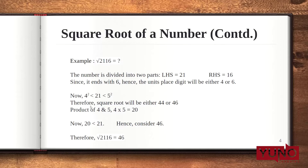Now let's see an example and understand the steps involved. We need to find the square root of 2116. The first step involves making a partition of the number starting from the right-hand side, dividing it into two parts with each part having two digits. Starting from the right, the RHS has two digits, which is 16, and the remaining digits on the LHS is 21. Since the square is ending with 6, the square root will either end with 4 or with 6.